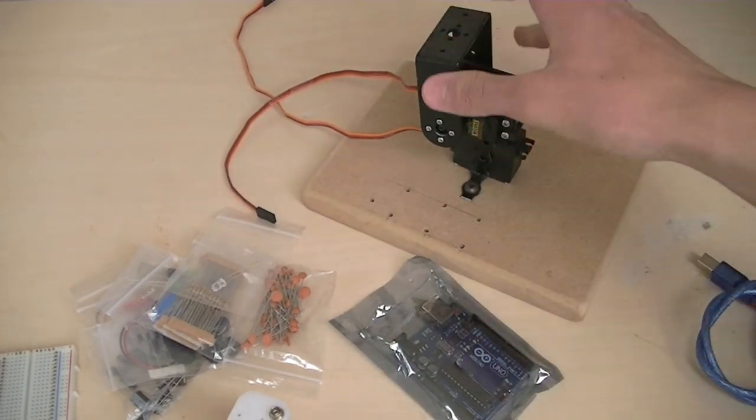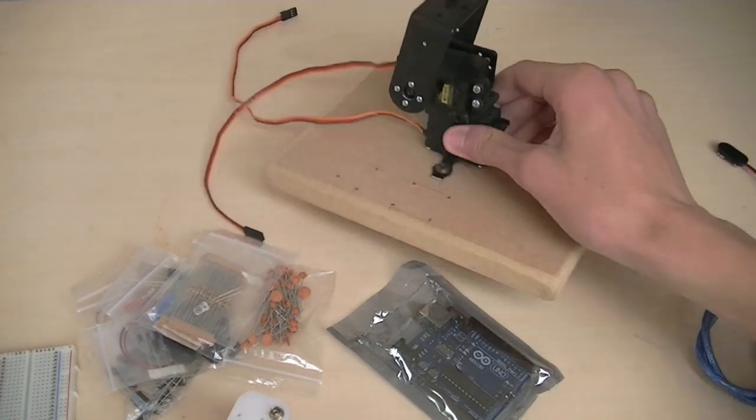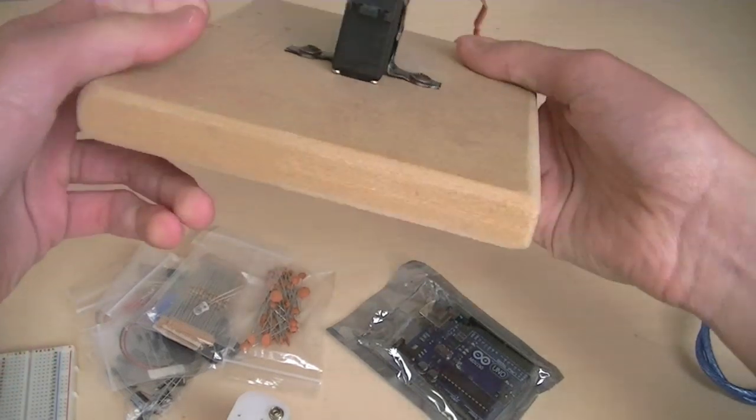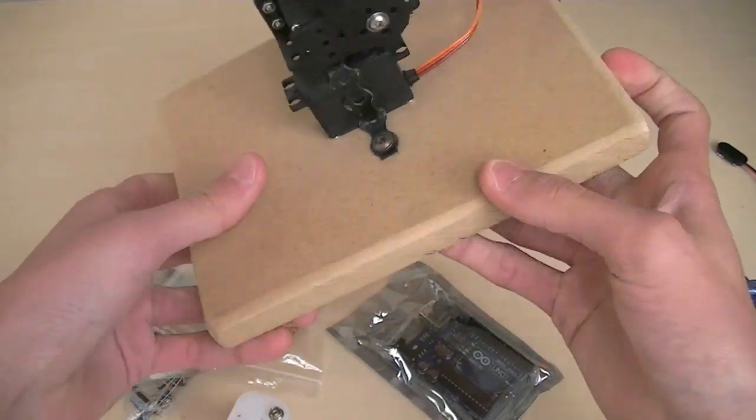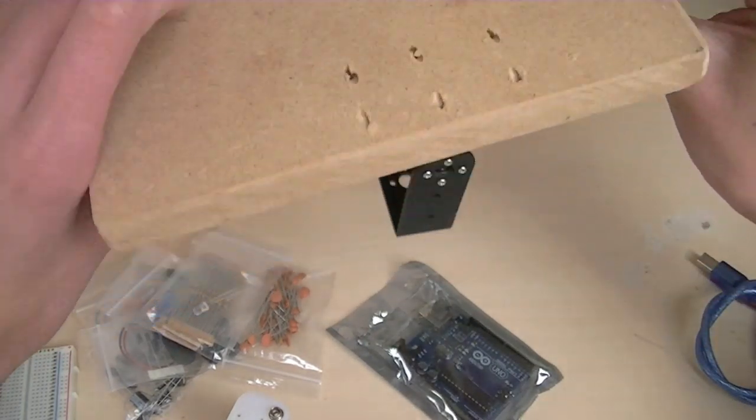So I assembled the mount with the pan and tilt system here, and I just cut a piece of MDF—I'm not sure what size it is—and then clamped it onto the bottom like that.